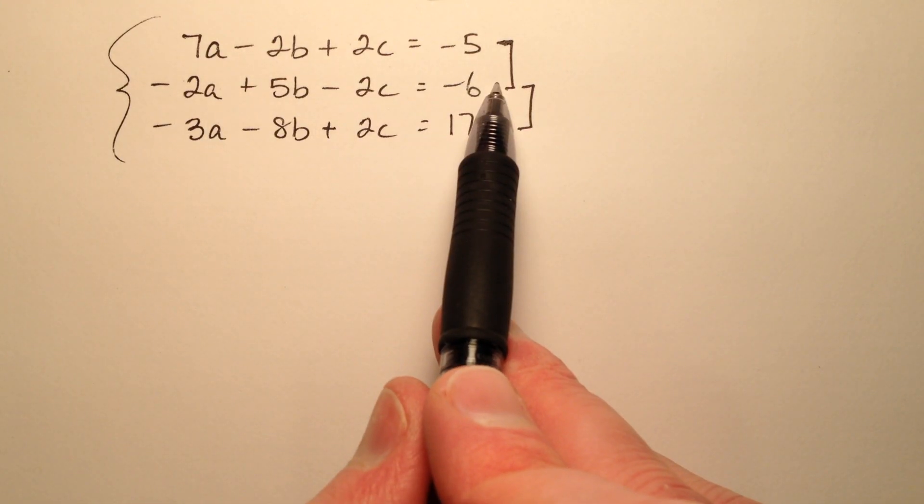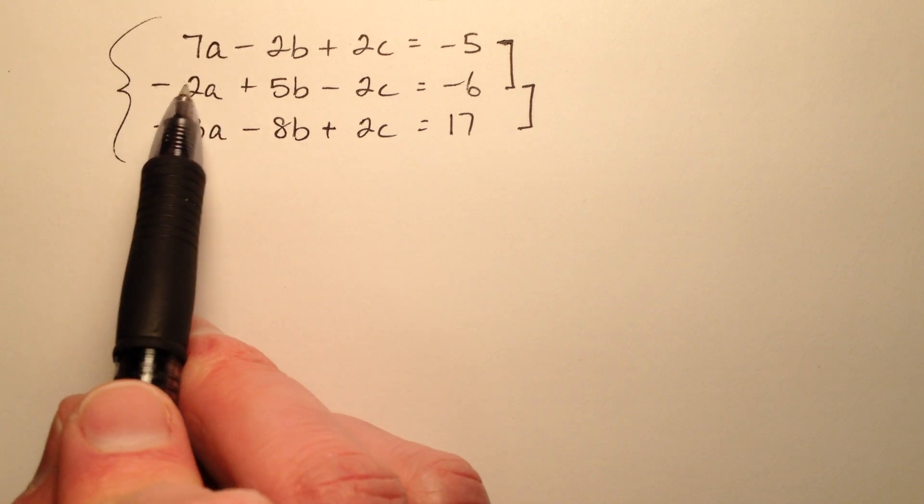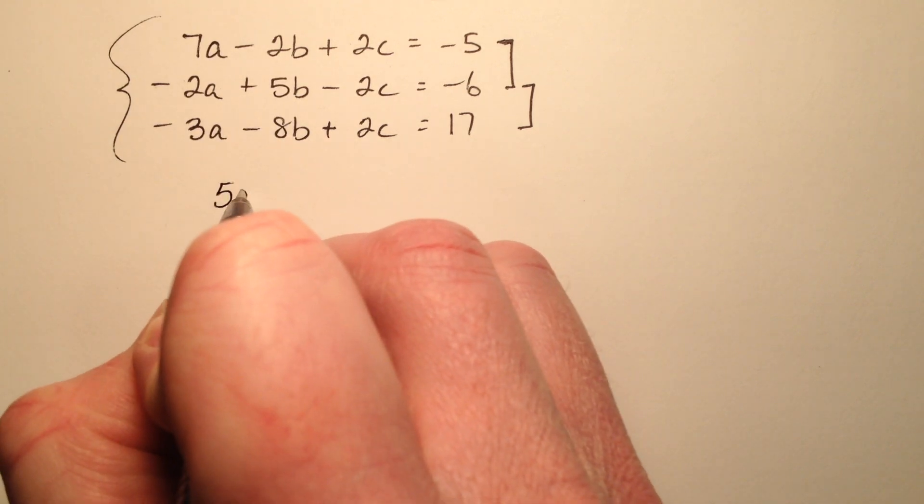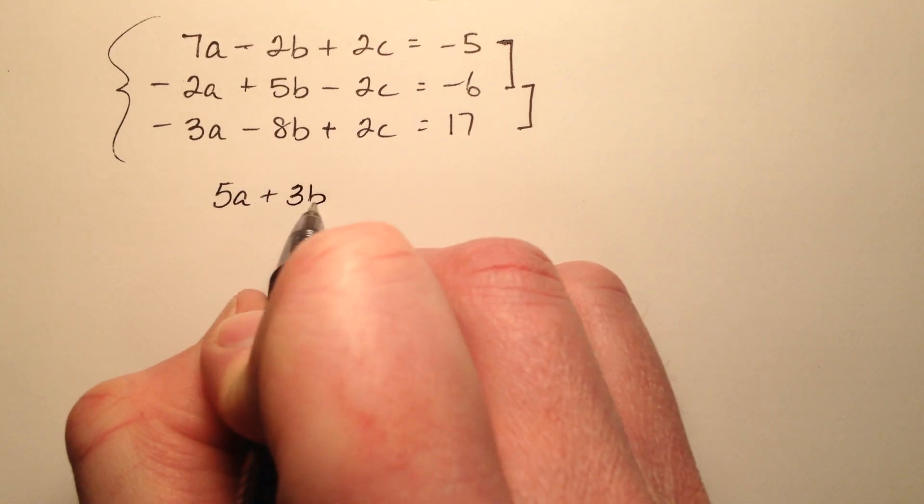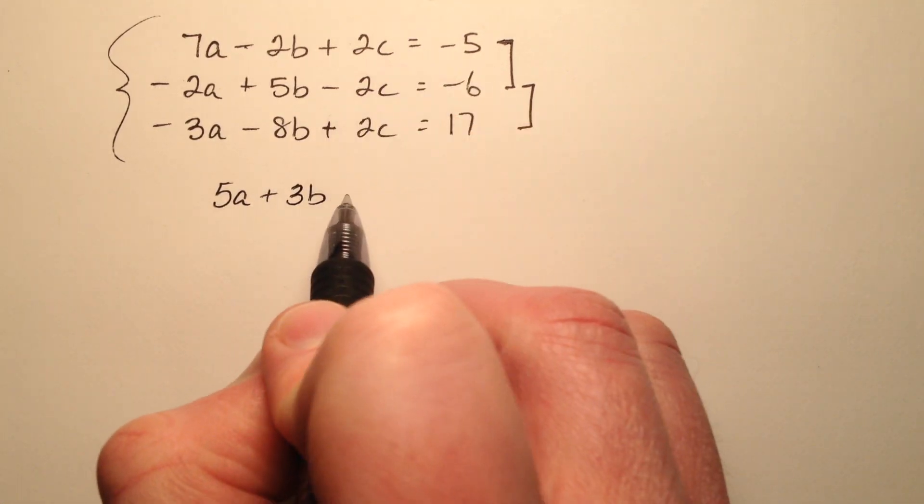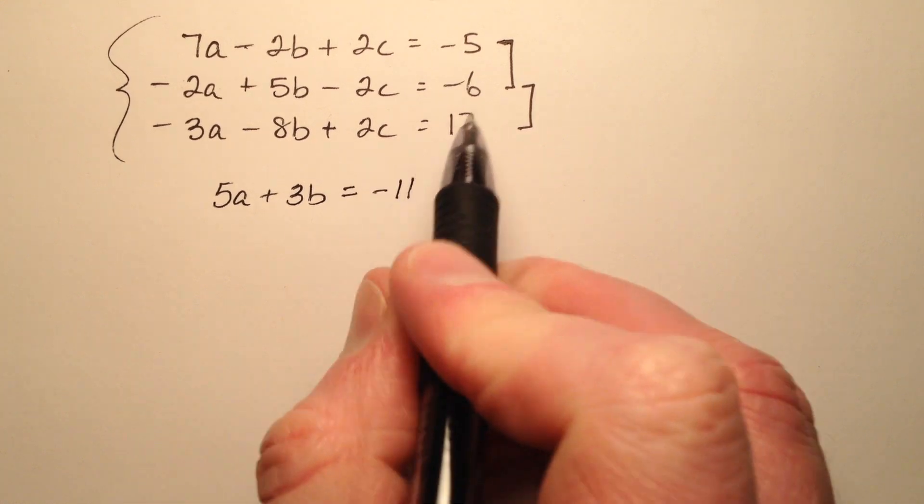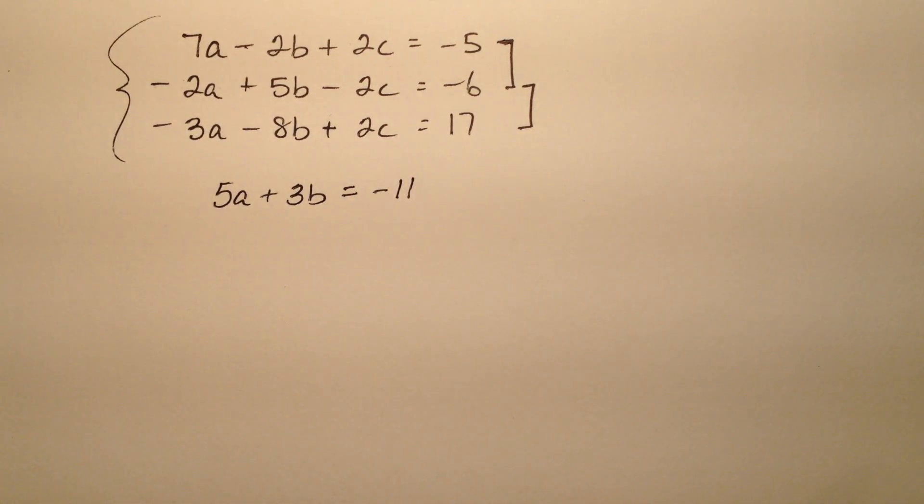Let's add these first two equations together. So 7a minus 2a is 5a, and negative 2b plus 5b is plus 3b. My c's cancel and that gives me negative 11 when I add up the negative 5 and negative 6.